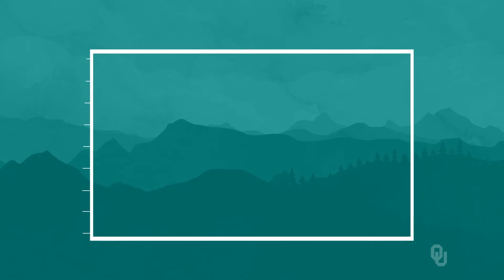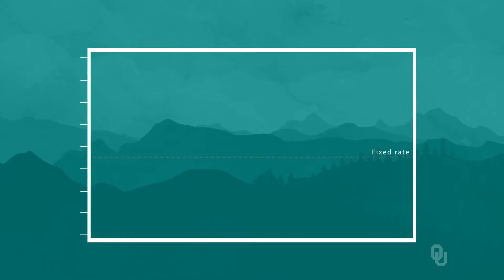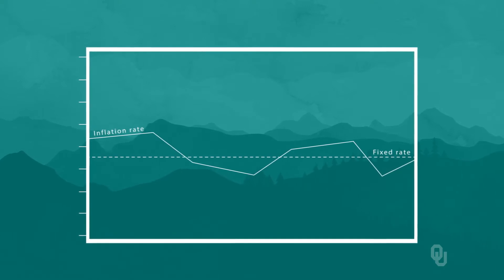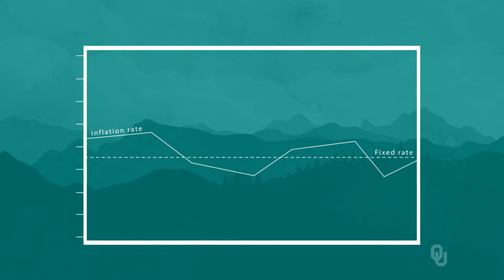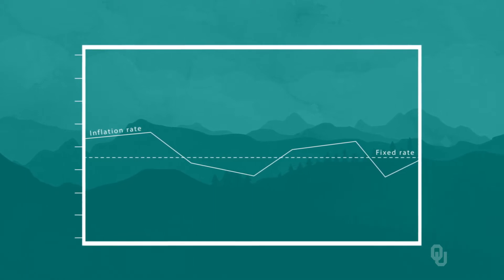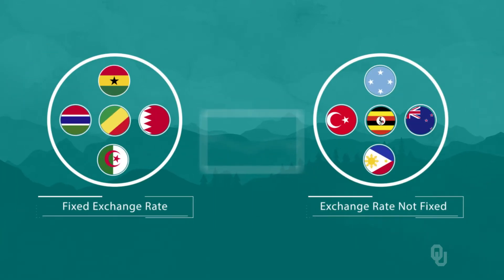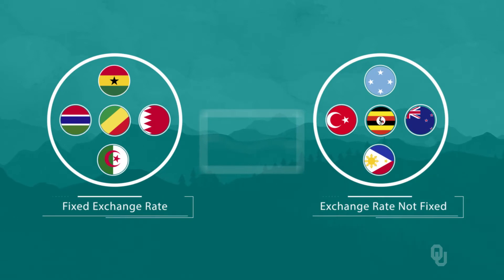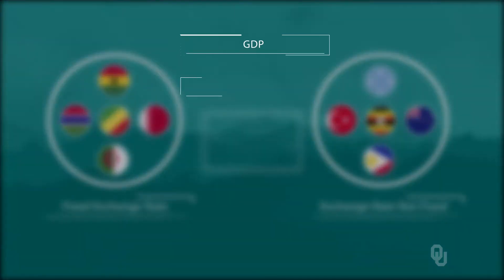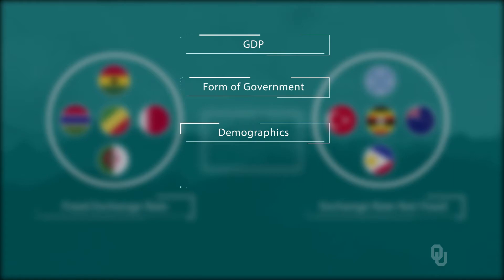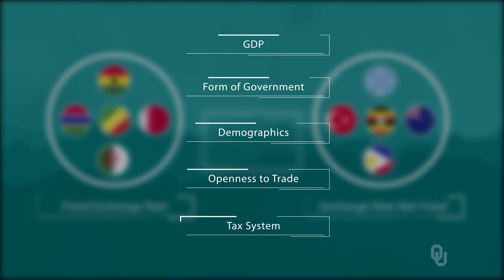Let me give a concrete example. Suppose we're interested in the effects of a country adopting a fixed exchange rate on its inflation rate. But we know the treatment here — having a fixed exchange rate — is not randomly assigned, and we are worried about selection bias. In matching, for every country with a fixed exchange rate, we find a country whose exchange rate is not fixed that is otherwise as close as possible in all other relevant categories, like GDP, form of government, demographics, openness to trade, tax system, and so on.